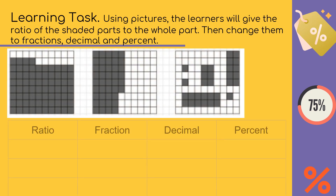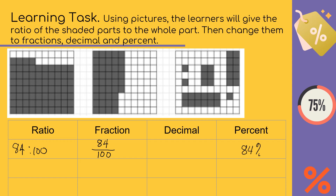We'll do number 1. The shaded part — counting: 10, 20, 30, 40, 50, 60, 70, 80, 84. So 84 is to 100. We write the fraction as 84 over 100. Since it's over 100, the percent is 84 percent. And 84 percent or 84 hundredths becomes 0.84. You may continue with numbers 2 and 3.